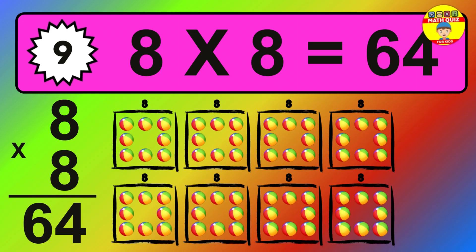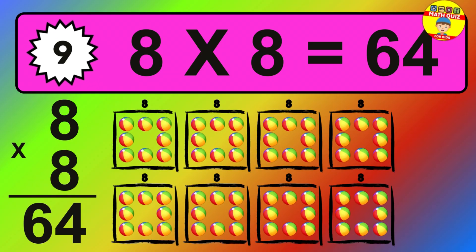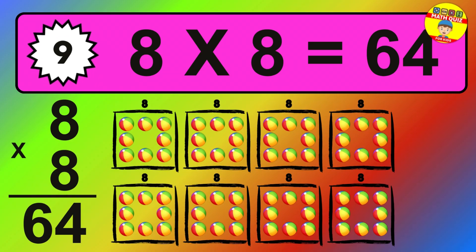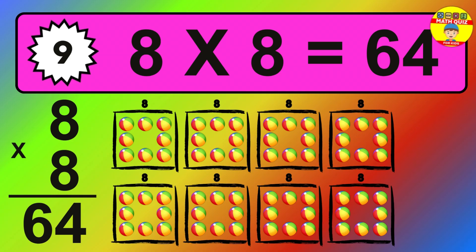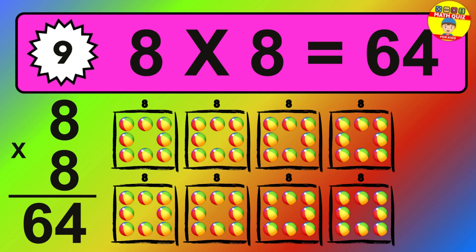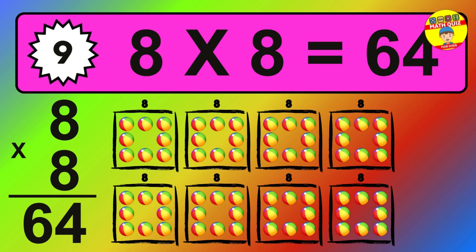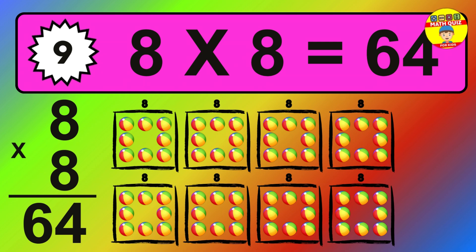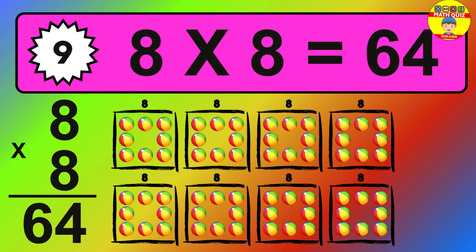Question nine: eight times eight equals what? The answer is: eight times eight is sixty-four. So how many balls do we have? Sixty-four balls.